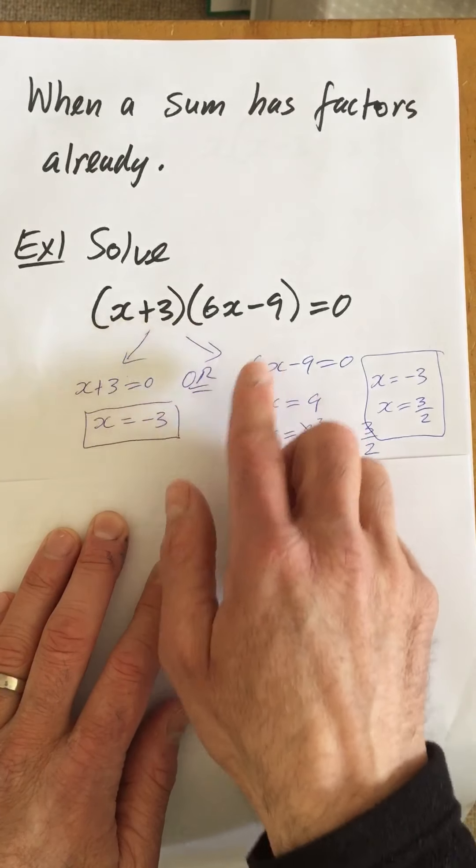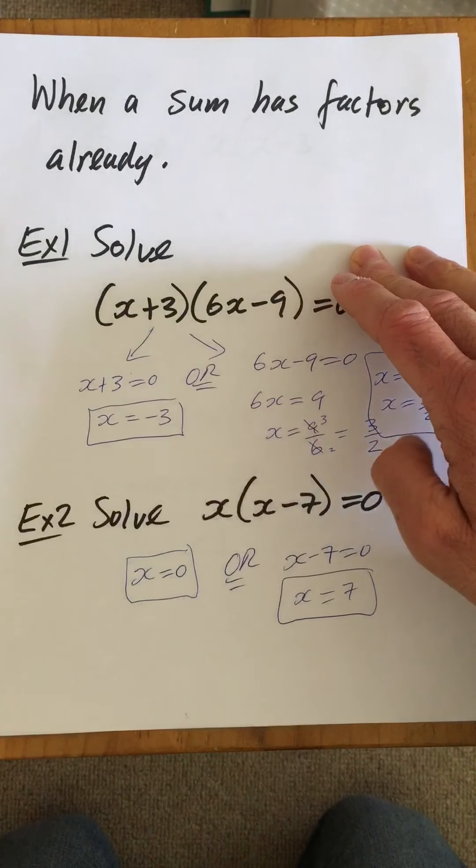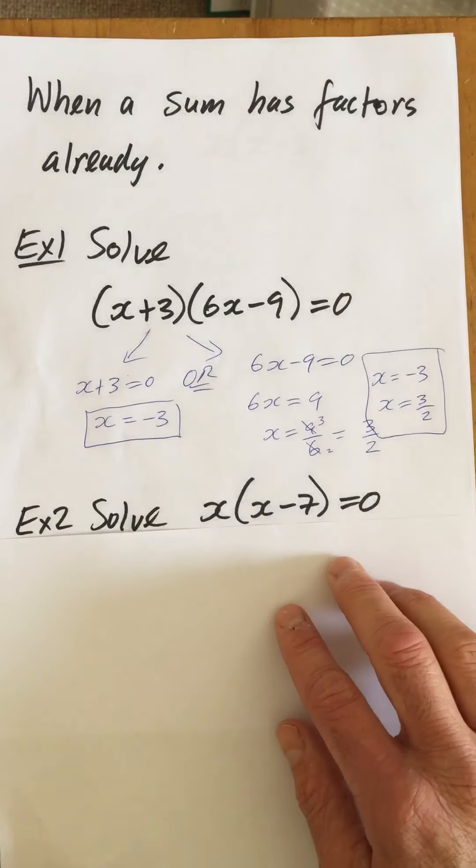Notice that we didn't have to do any factorizing here. It was already done for us. In example two, we have x(x-7)=0.